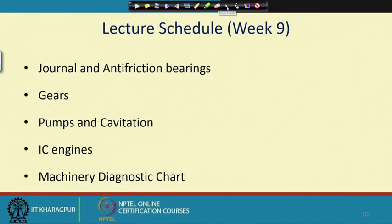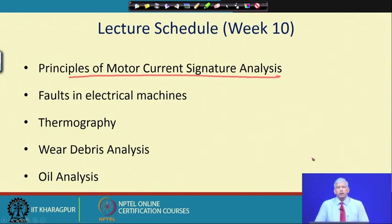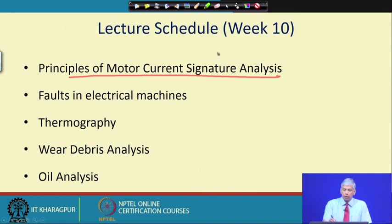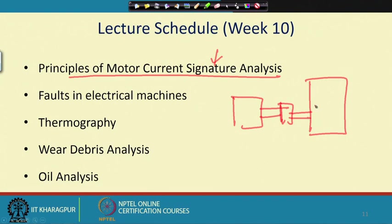In Week 10 we move to the principles of motor current signature analysis (MCSA). IIT Kharagpur has been a pioneer in using MCSA to find faults in machines driven by electrical motors. For a mechanical machine like a pump or gearbox run by an electrical motor, we can indirectly measure the quality of the motor current and find out the fault in the mechanical machine being driven — a very powerful technique for which we have a patent. Similarly, for any rotating machine, if we put a tacho generator, the ripple voltage generated can reveal the fault.